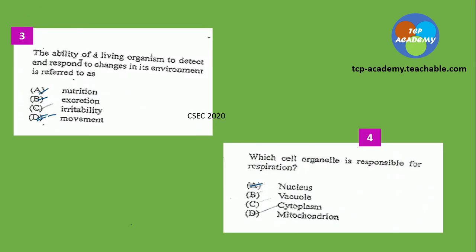Question number three: the ability of a living organism to detect and respond to changes in its environment is referred to as what? This comes from sensitivity and coordination. Make sure you're reading the options carefully and the question carefully before you make a selection. Do as much as possible to score full marks.